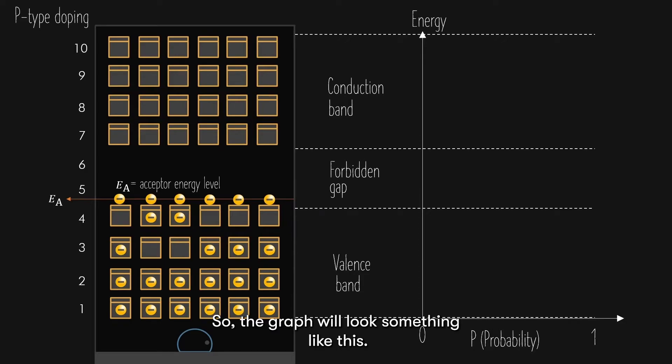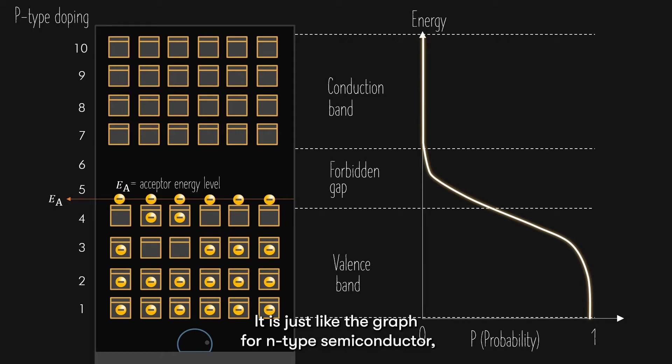So, the graph will look something like this. It is just like the graph for n-type semiconductors, except that the curve is shifted downwards.